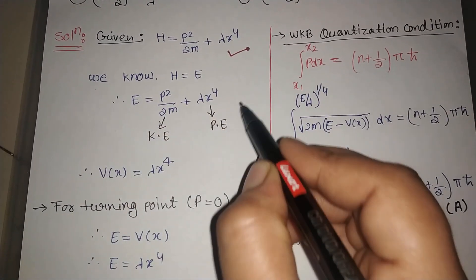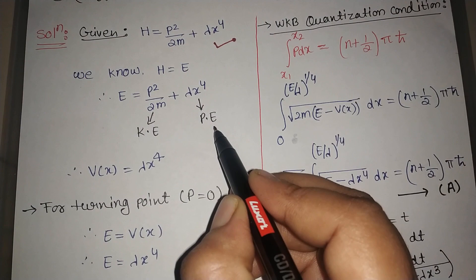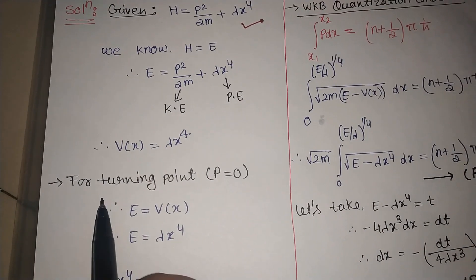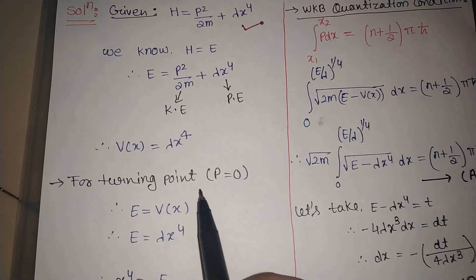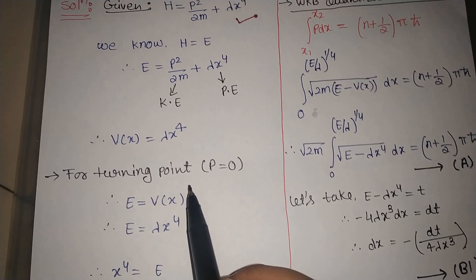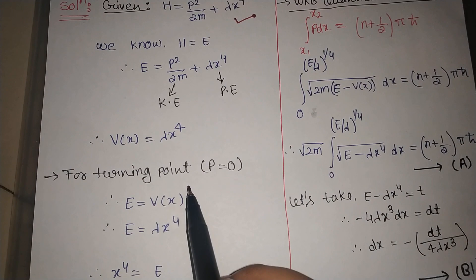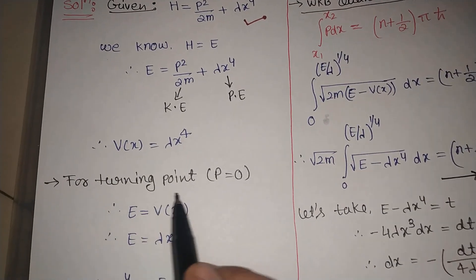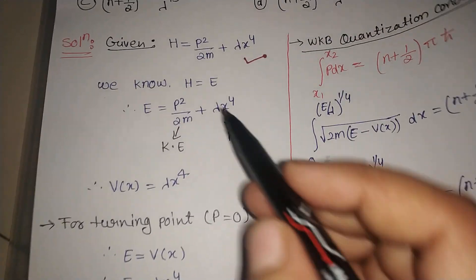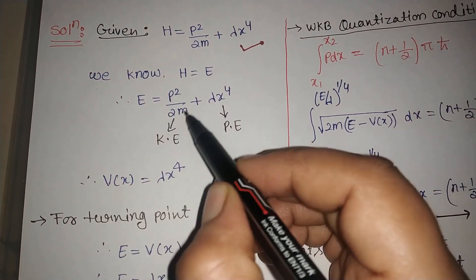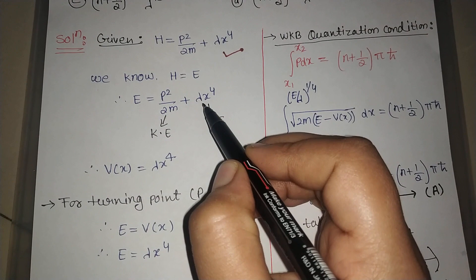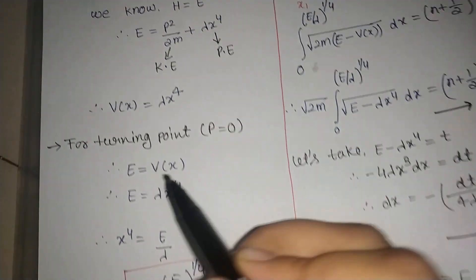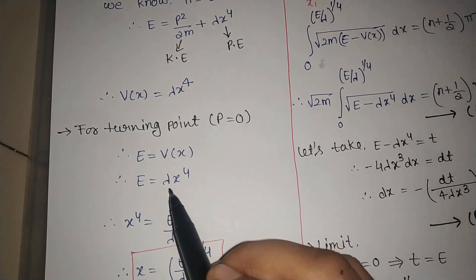So from this equation we have got our potential energy V = λx⁴. Now for this potential we will find the turning points. At the turning point, momentum becomes zero, which means the kinetic energy term becomes zero. So we have E = λx⁴, that is E = V(x).